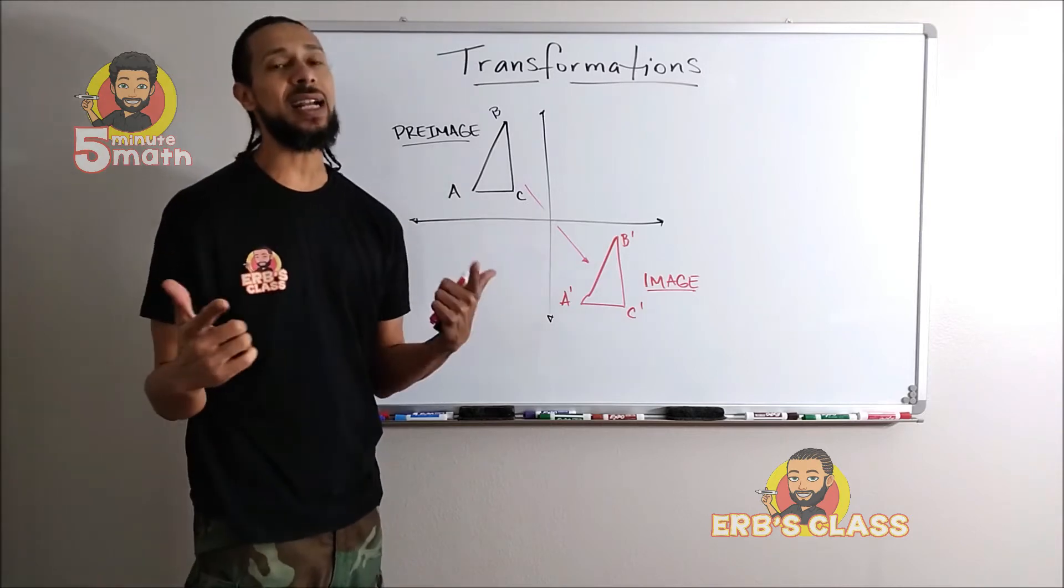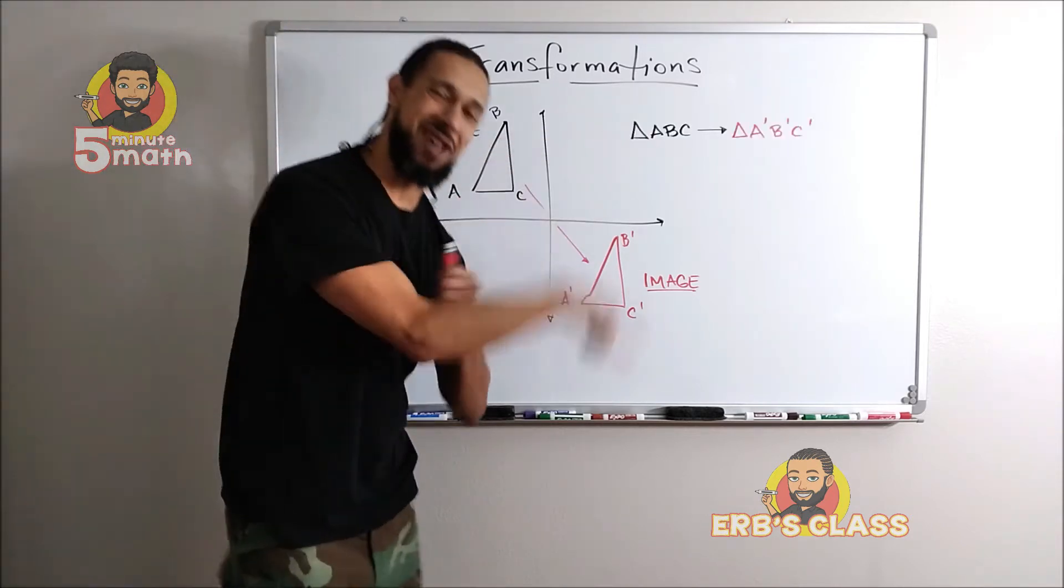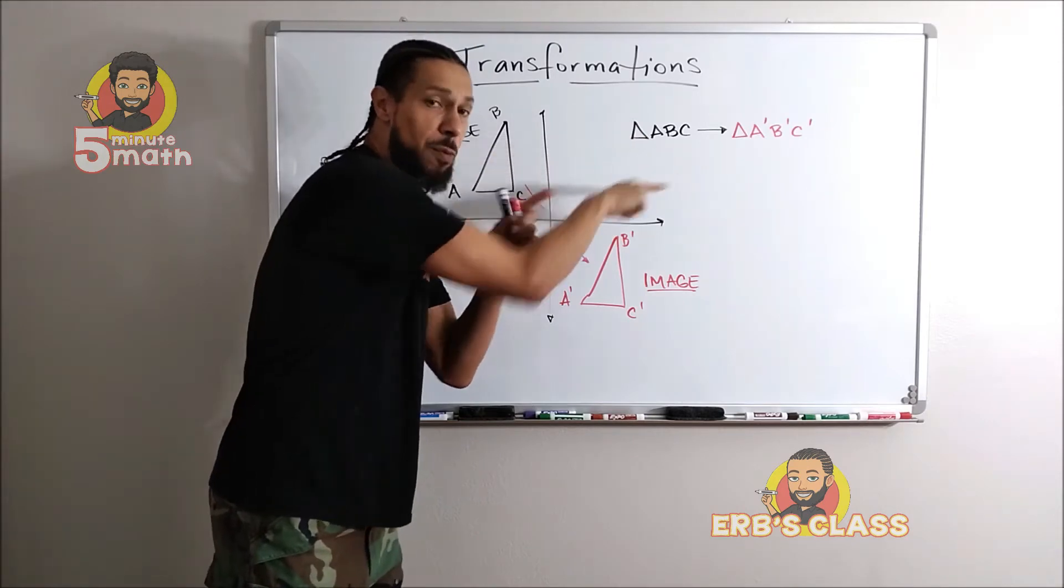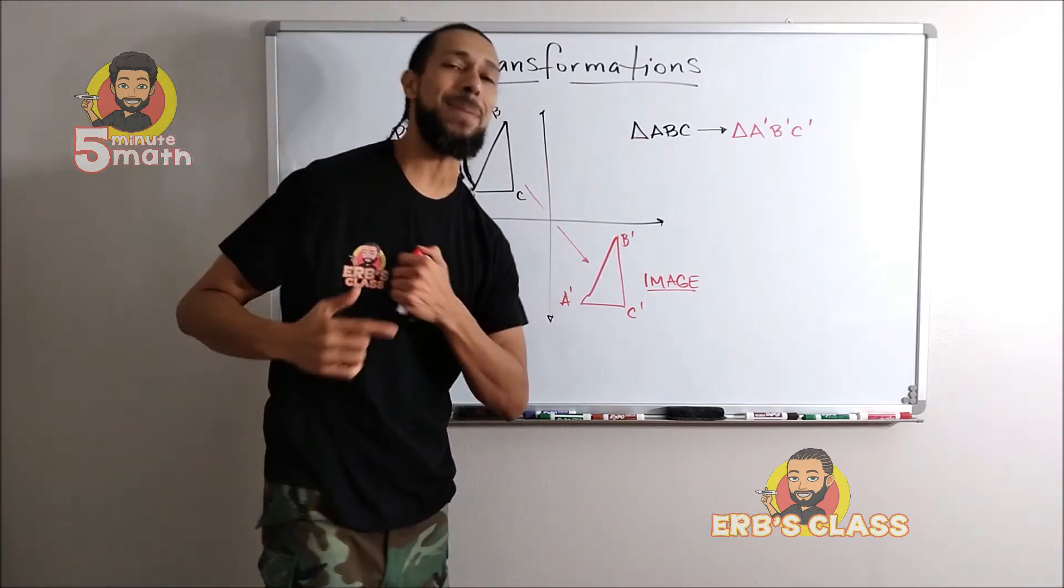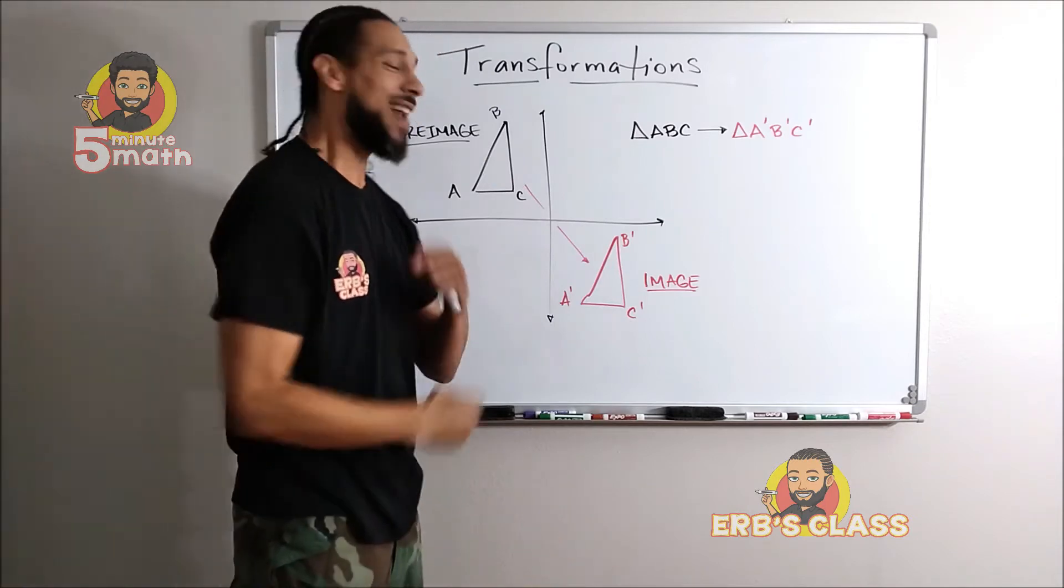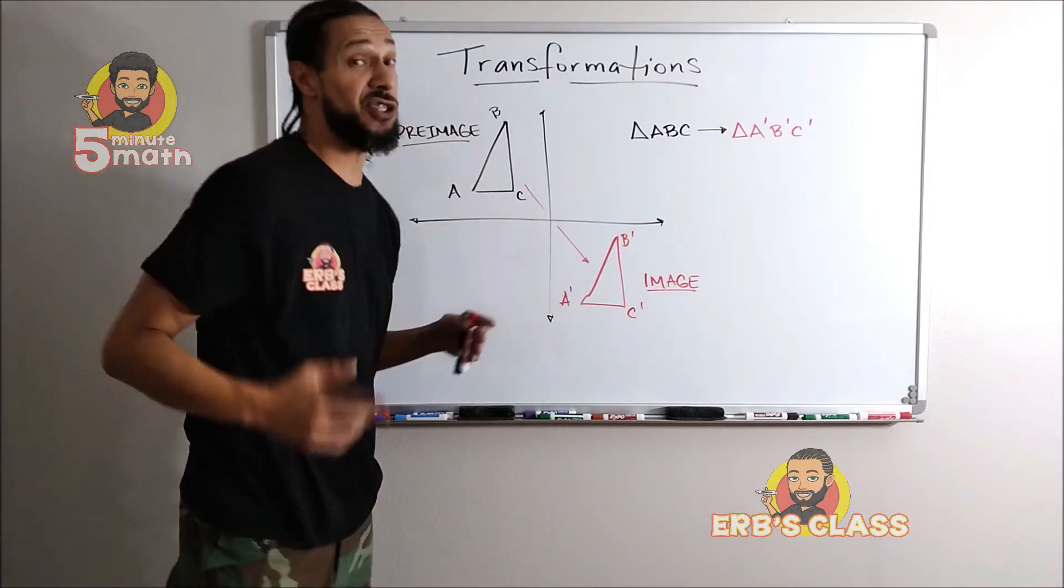So as far as notation goes, you might see it in class something that looks like this: triangle ABC, that arrow means is transformed into, triangle A prime B prime C prime.